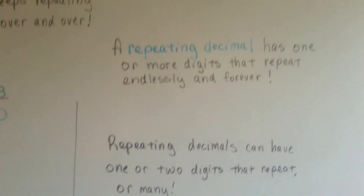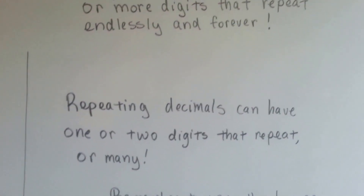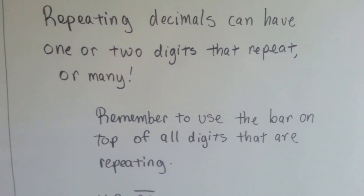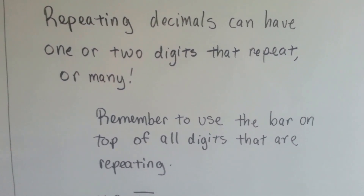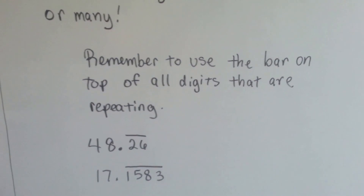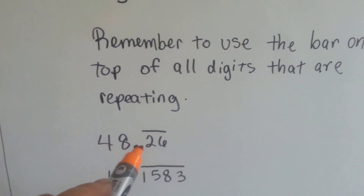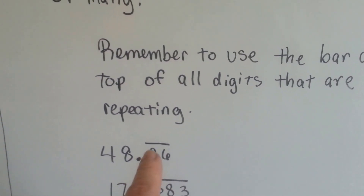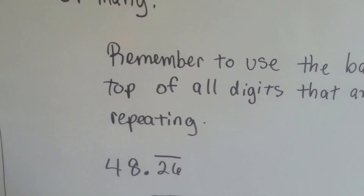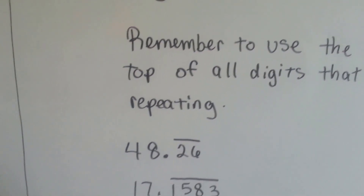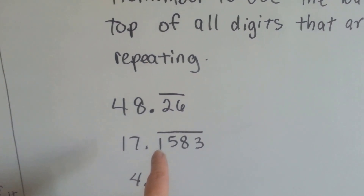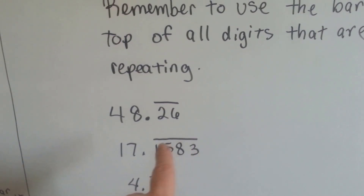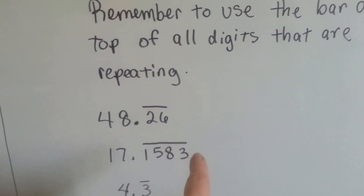So that's a repeating decimal — it's got one or more digits that repeat endlessly. They can have 1 or 2 digits that repeat, or many. Remember to use the bar on top of all the repeating digits. You can use the ellipsis if you like. On this number, 48 and 26 hundredths, if the 2 and the 6 are repeating, then you put the bar over both the 2 and the 6. If you've got 17 and 1,583 ten-thousandths and the 1,583 keeps repeating, you put it over the whole thing.